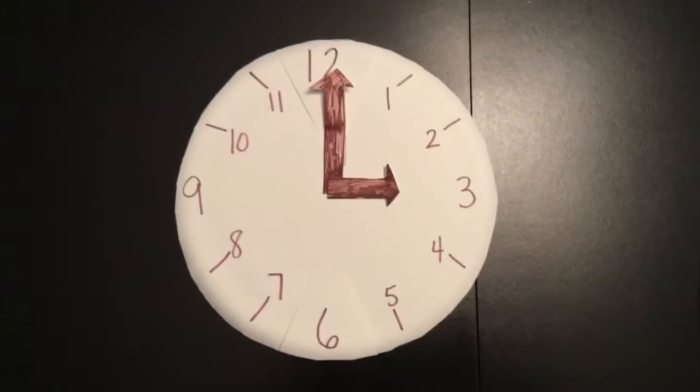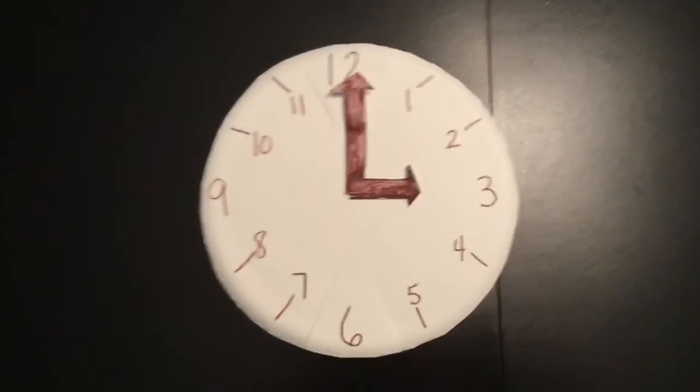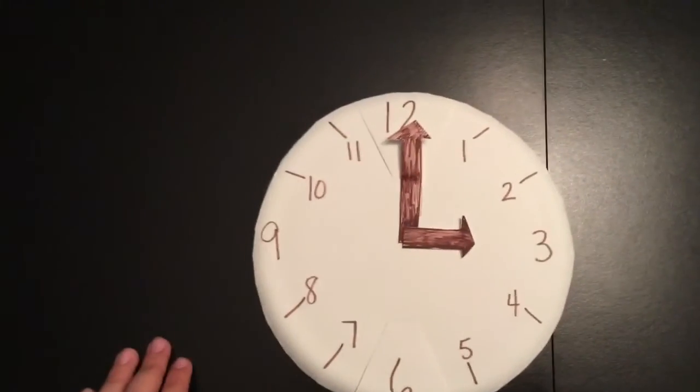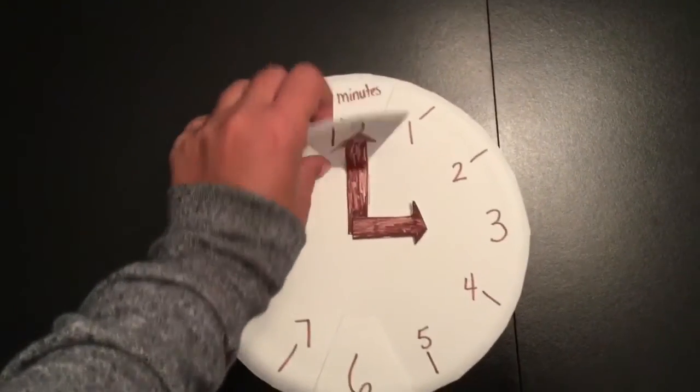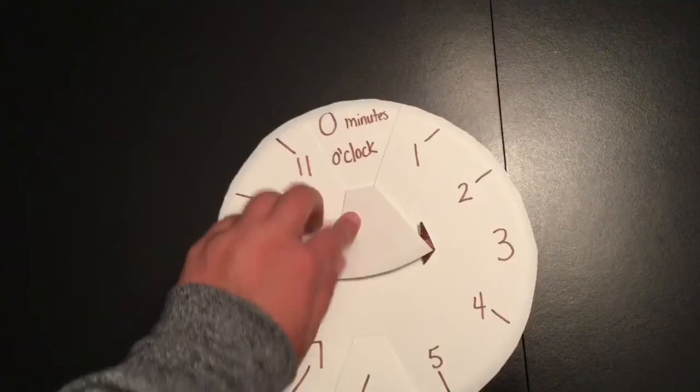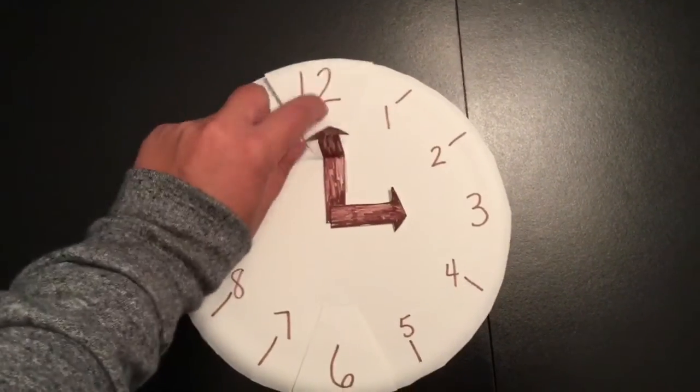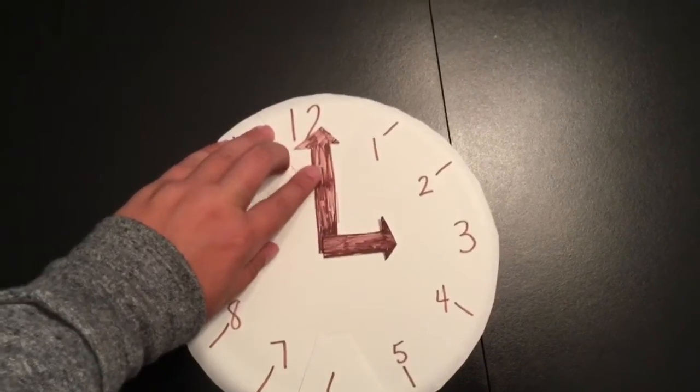So now I put my arrows on and the hour hand is pointing to the 3 and the minute hand is pointing to the 12. So if I open this up I know 12 means zero minutes, so it is 3 o'clock.